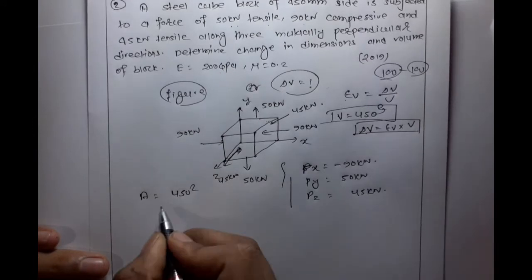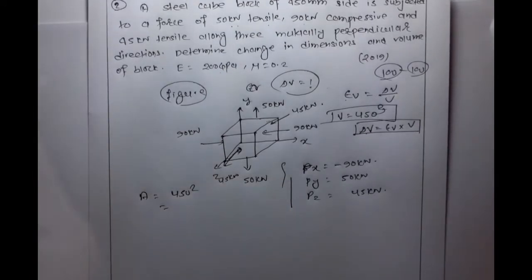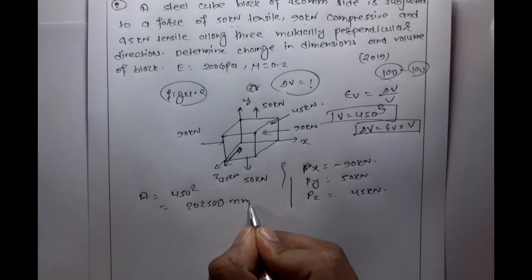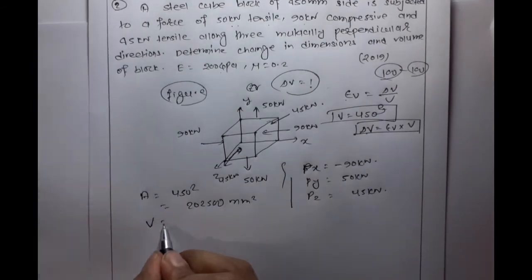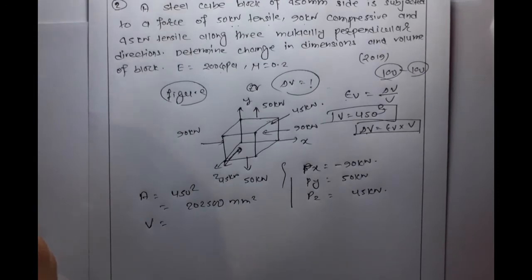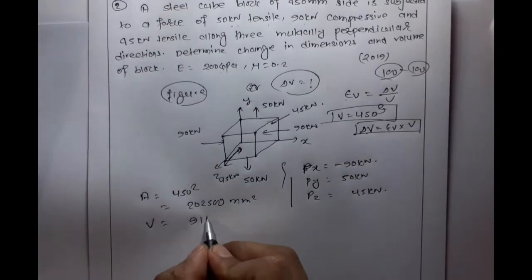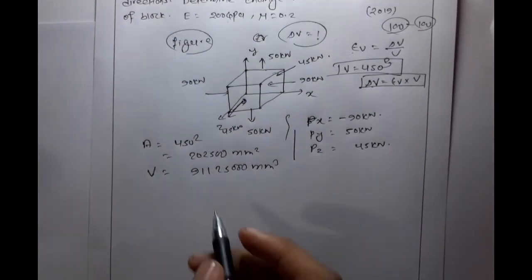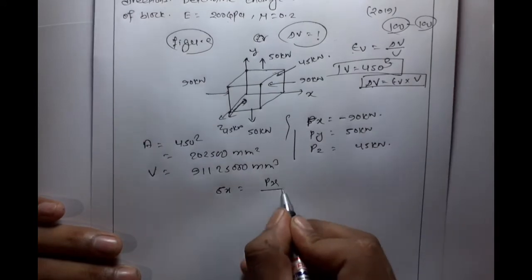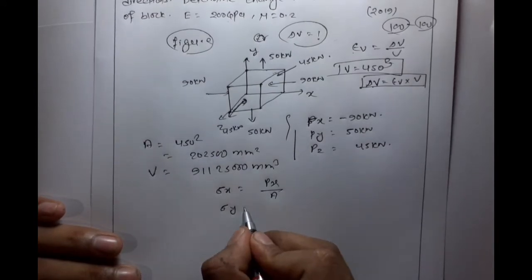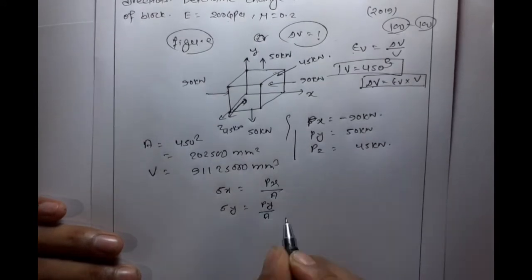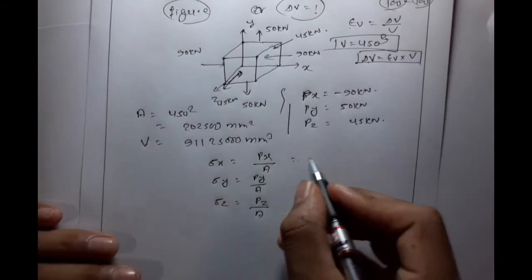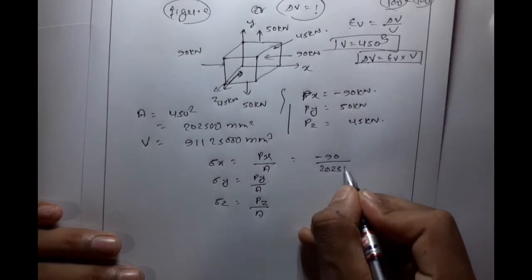Area = 450 squared = 450 x 450 = 202,500 mm squared. Volume = 450 cubed = 91,125,000 mm cubed. Sigma X = Px / A. Sigma Y = Py / A. Sigma Z = Pz / A. So Sigma X = minus 90 / 202,500.